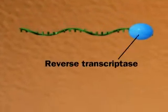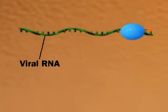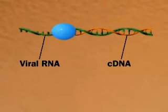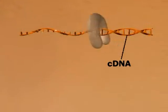Using reverse transcriptase brought in by the virus, the viral RNA makes a complementary cDNA. The viral RNA degrades. The cDNA is the template for a second DNA strand.